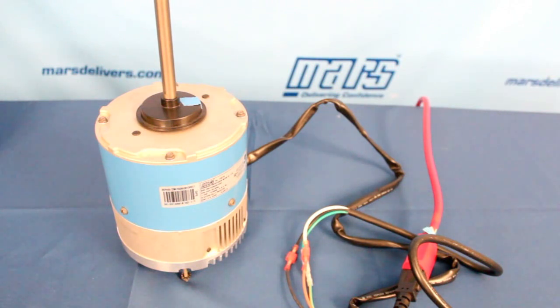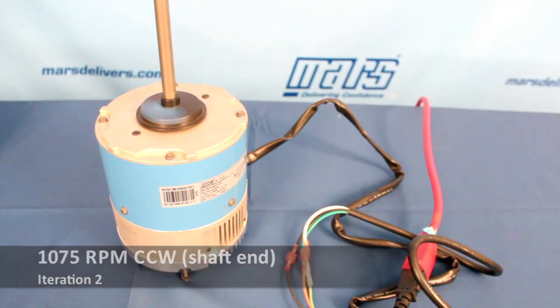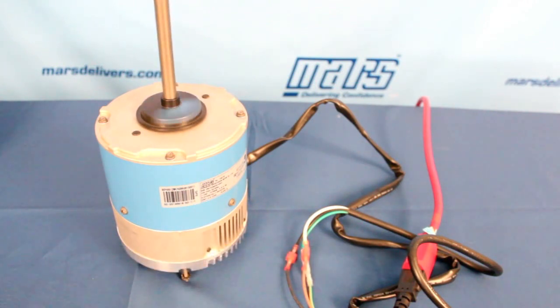It's going to go on to the second iteration and show us that iteration. That's going to be counterclockwise 1075 RPM. And if this still isn't what we want for the application, we will let the motor continue on to its third iteration.